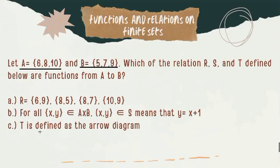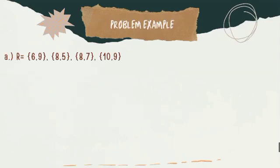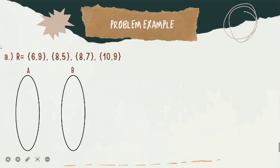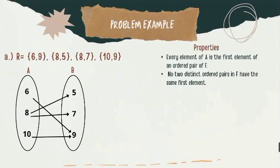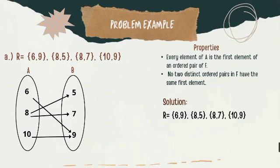Now let's proceed to the example problem. We have here example A, which is R equals the ordered pairs (6,9), (8,5), (8,7), and (10,9). As you can see in the arrow diagram, these are the pairs: 6→9, 8→5, 8→7, and 10→9. In every ordered pair, we need to base our analysis on the two properties.